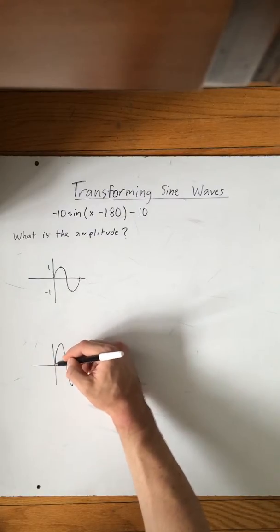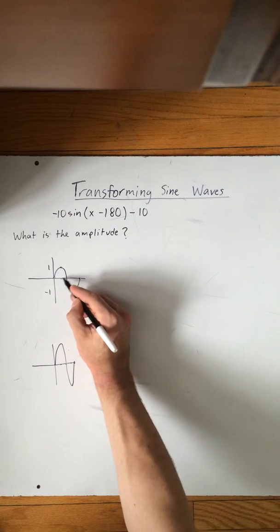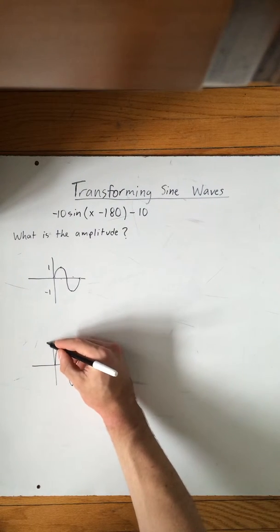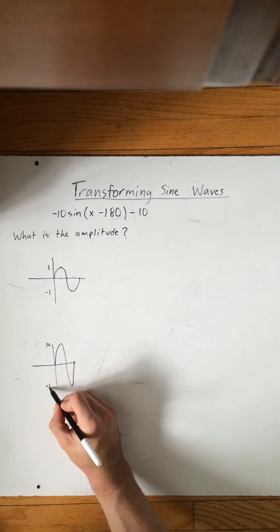So this will still be moving 90 degrees over, just like this. So this will now be 10 and that will be negative 10.